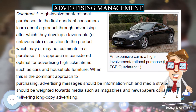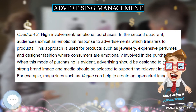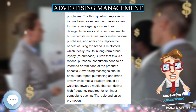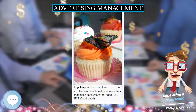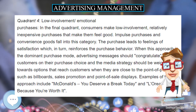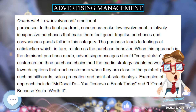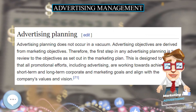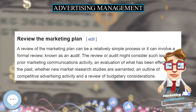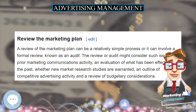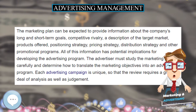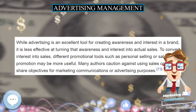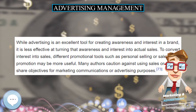Advertising planning does not occur in a vacuum. Advertising objectives are derived from marketing objectives; therefore, the first step in any advertising planning is to review the objectives set out in the marketing plan to ensure that all promotional efforts are working towards achieving both short-term and long-term corporate and marketing goals. A review of the marketing plan can be a relatively simple process or can involve a formal audit, which might consider prior marketing communications activity, an evaluation of what has been effective in the past, whether new market research studies are warranted, an outline of competitive advertising activity, and a review of budgetary considerations.